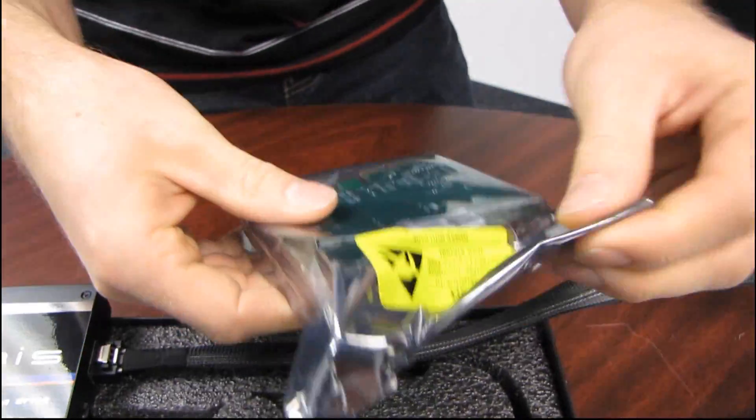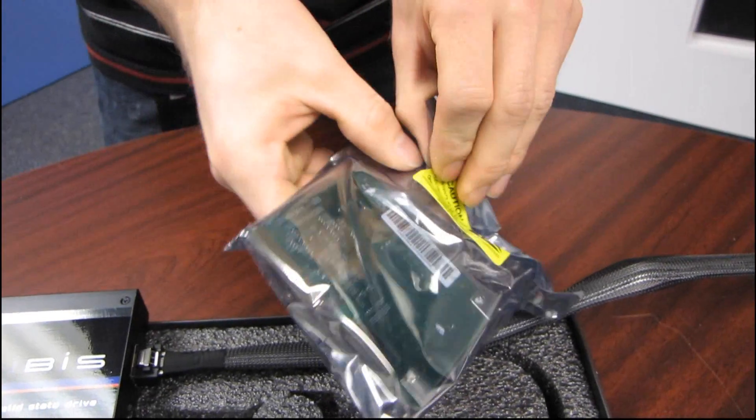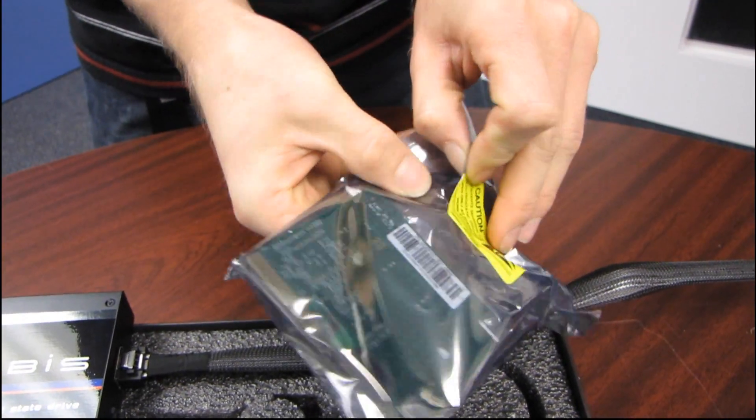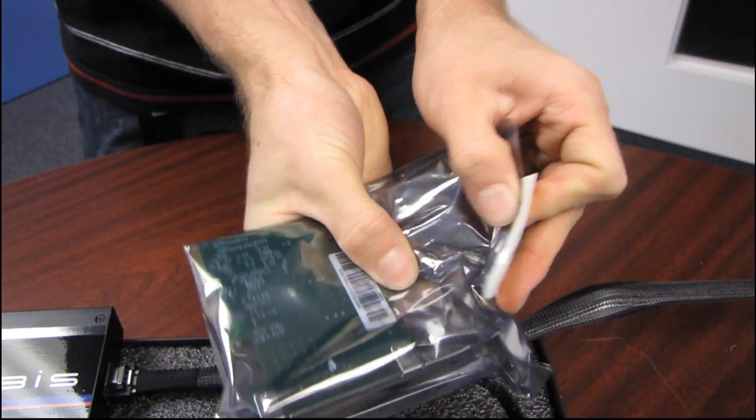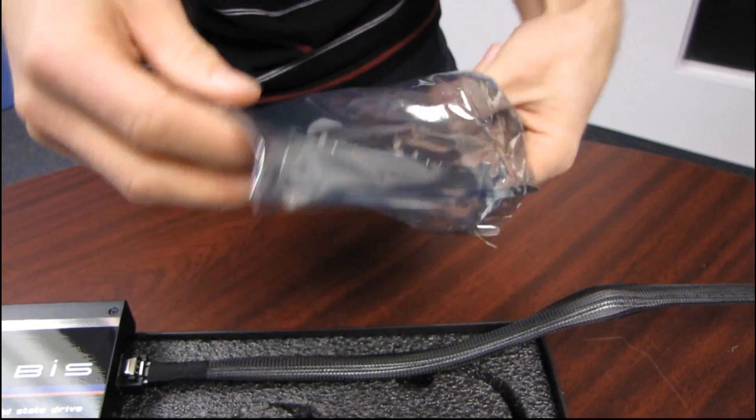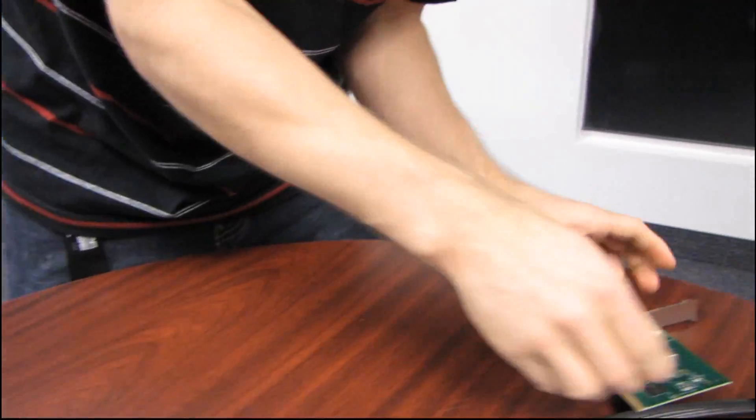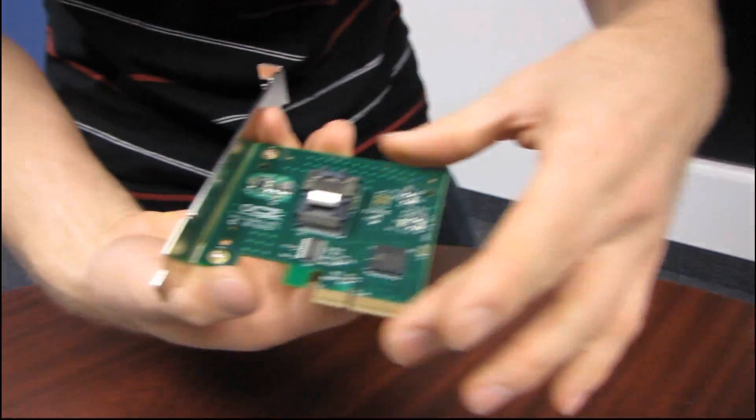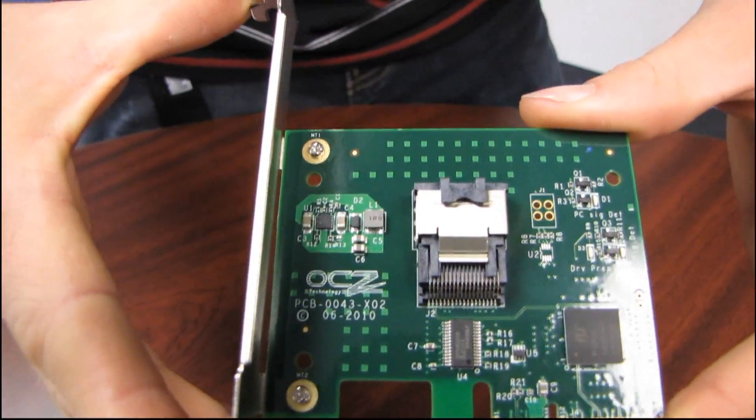And then you go ahead and plug that guy into this little card right here. And this is where the magic happens because this card is a controller card. Now you can buy an IDE controller. You can buy a SATA controller. You can buy a SAS controller, or if you want to, oh, I dropped it. Wow. Or if you want to have the most cutting edge performance possible, you can buy this controller. So here it is.